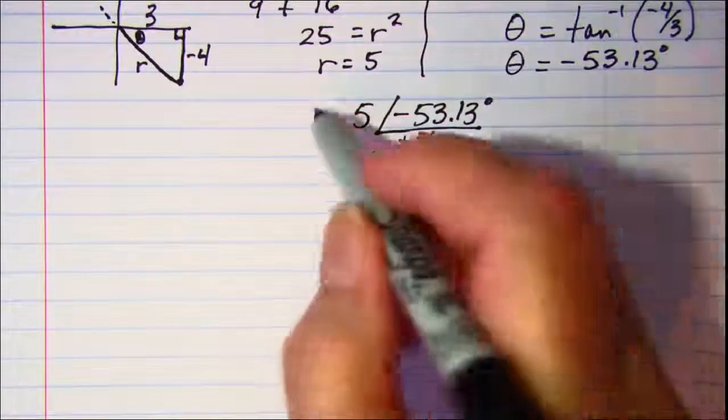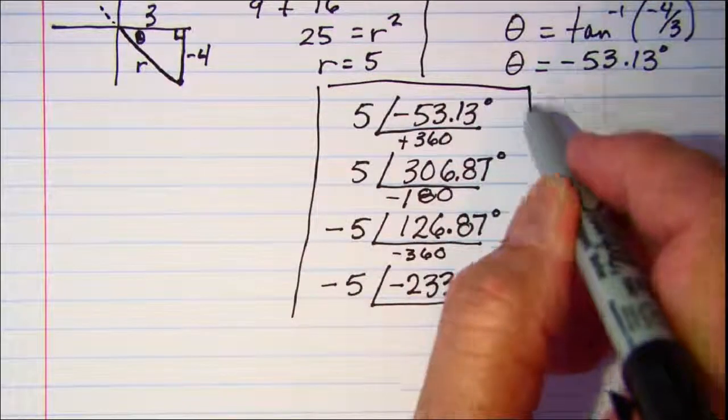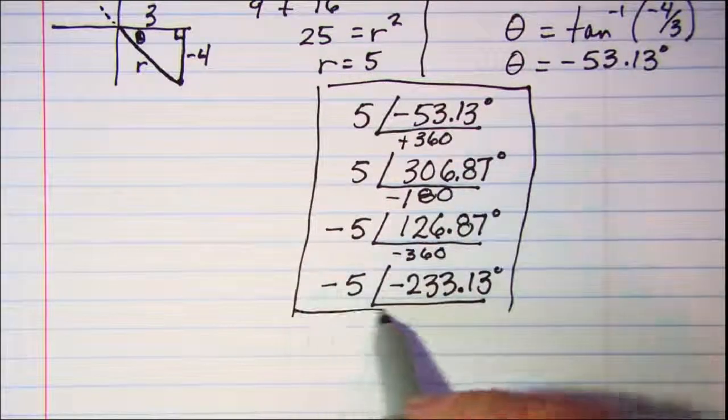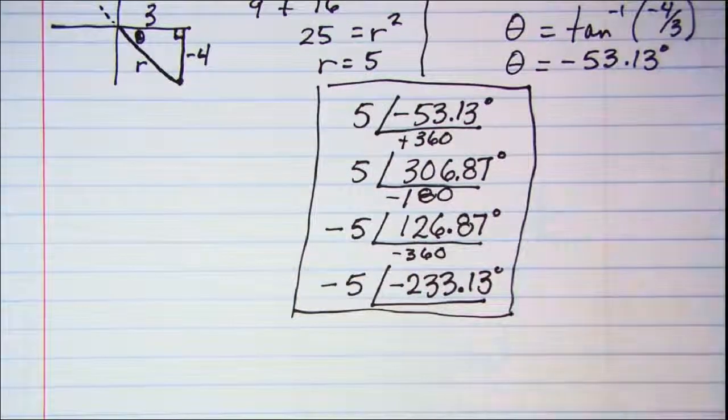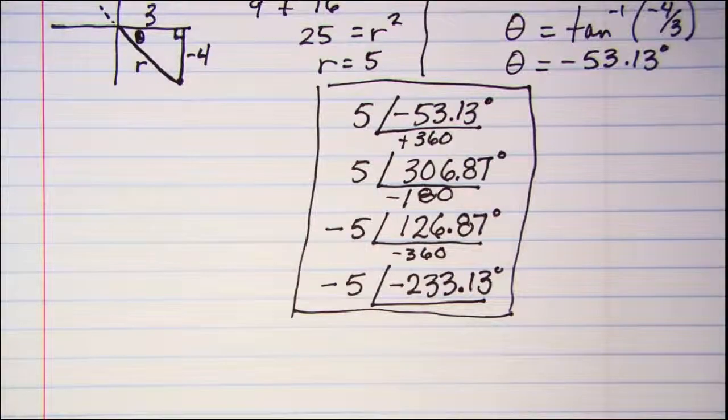So these are our four forms: (5, -53.13°), (5, 306.87°), (-5, 126.87°), and (-5, -233.13°).